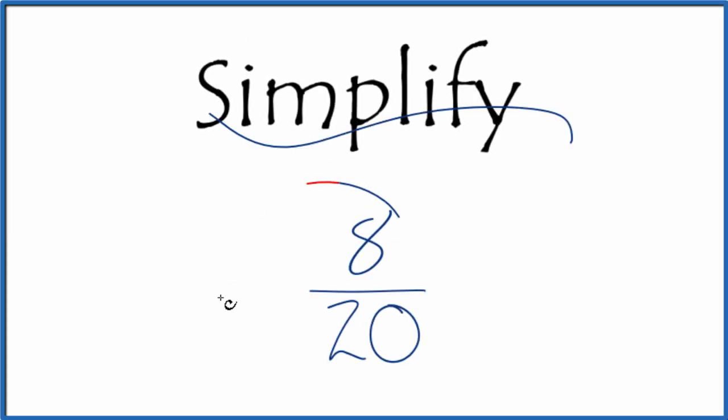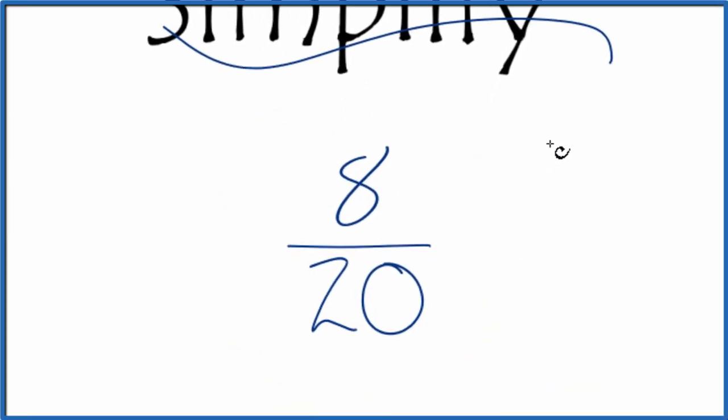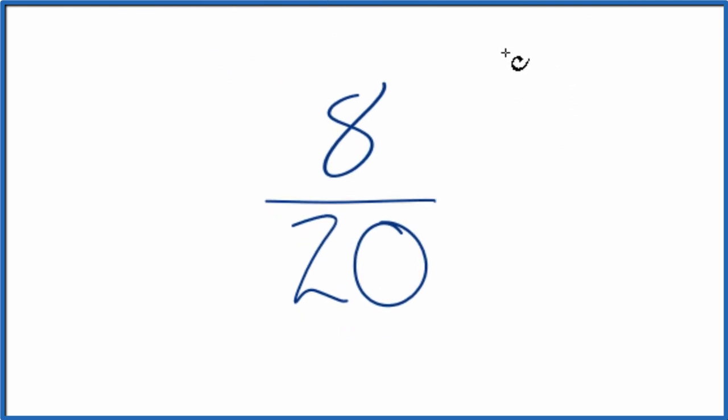Let's simplify the fraction 8/20. We want to find another fraction that's equivalent, equal to 8 over 20, with the same value, just reduced to lowest terms.